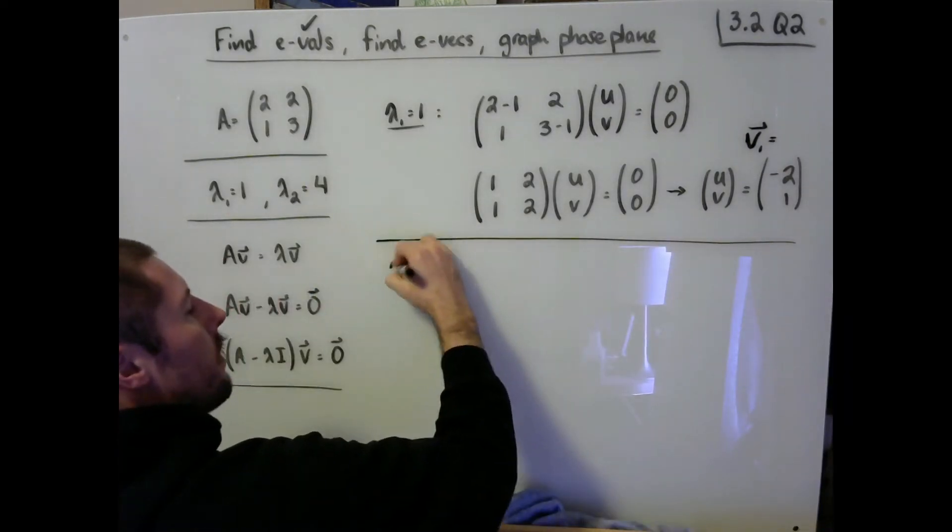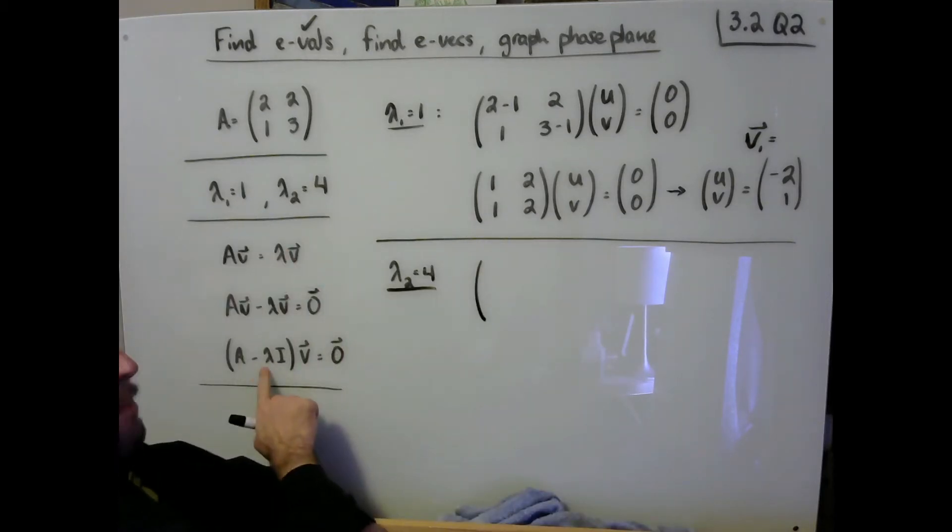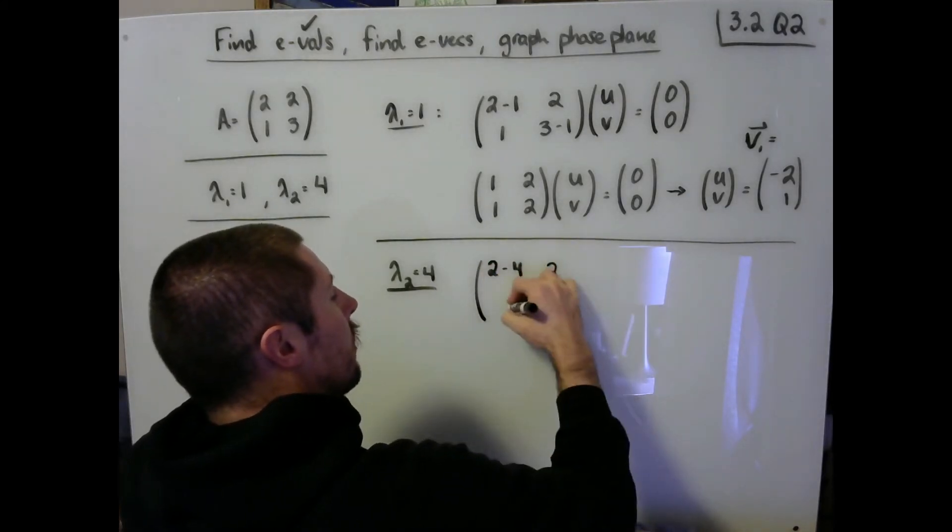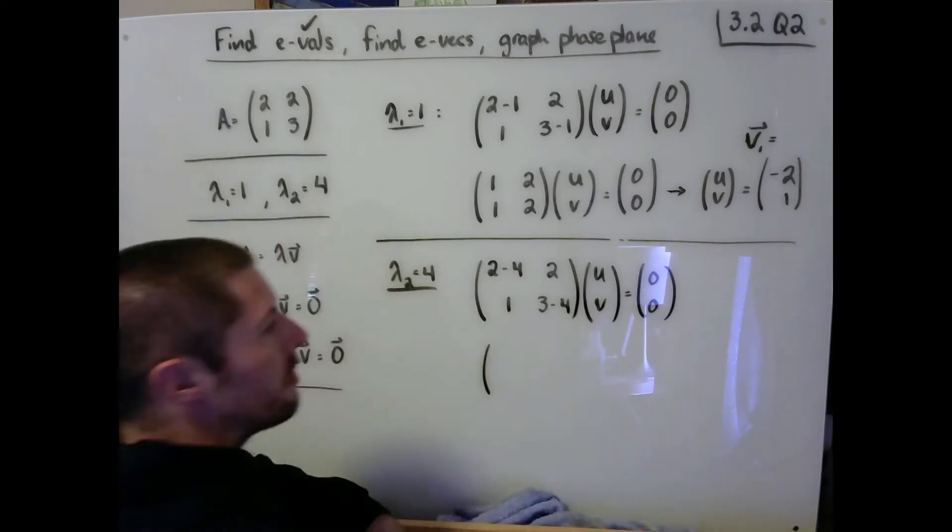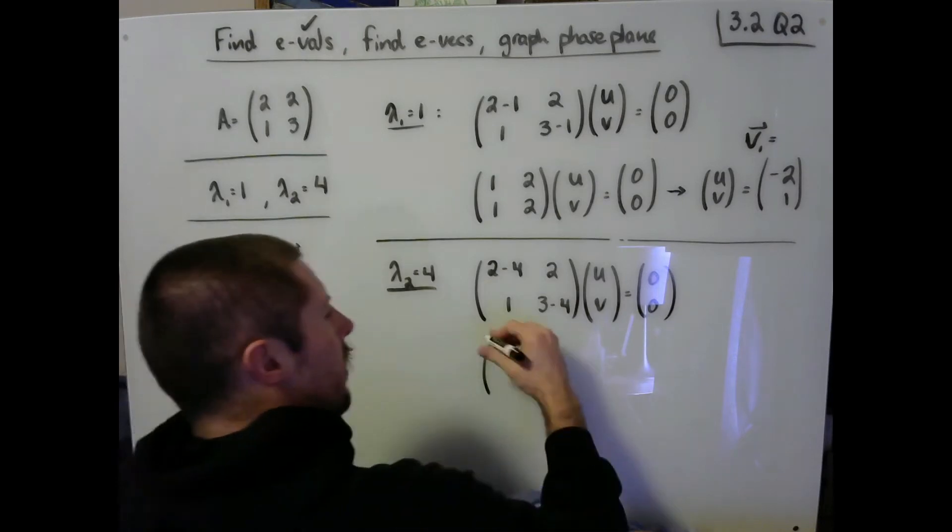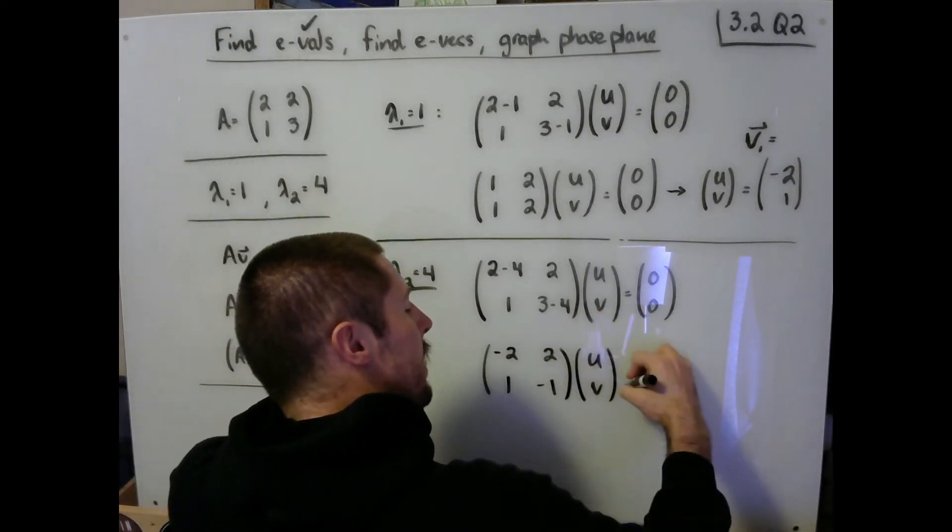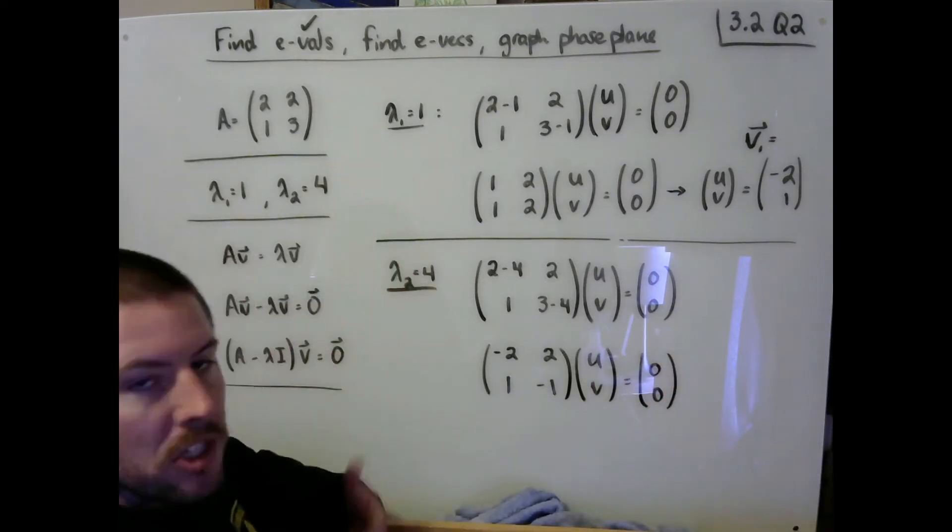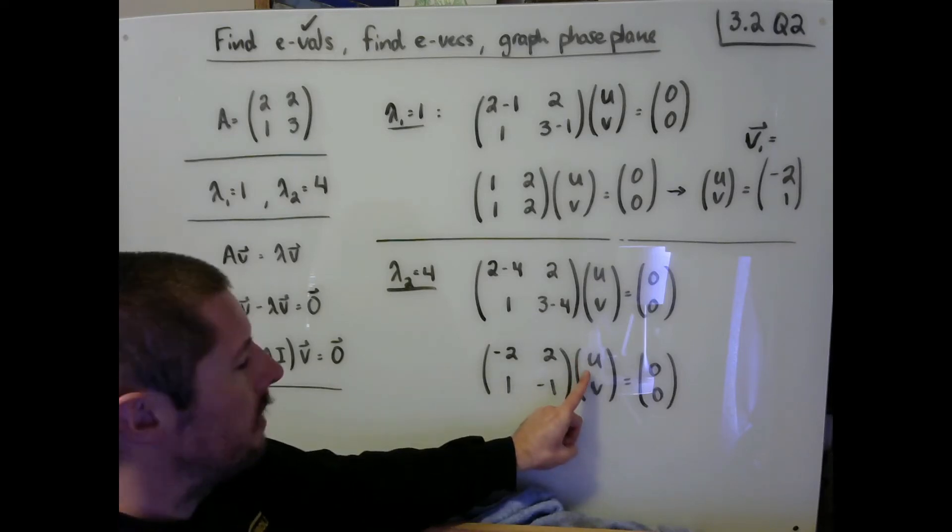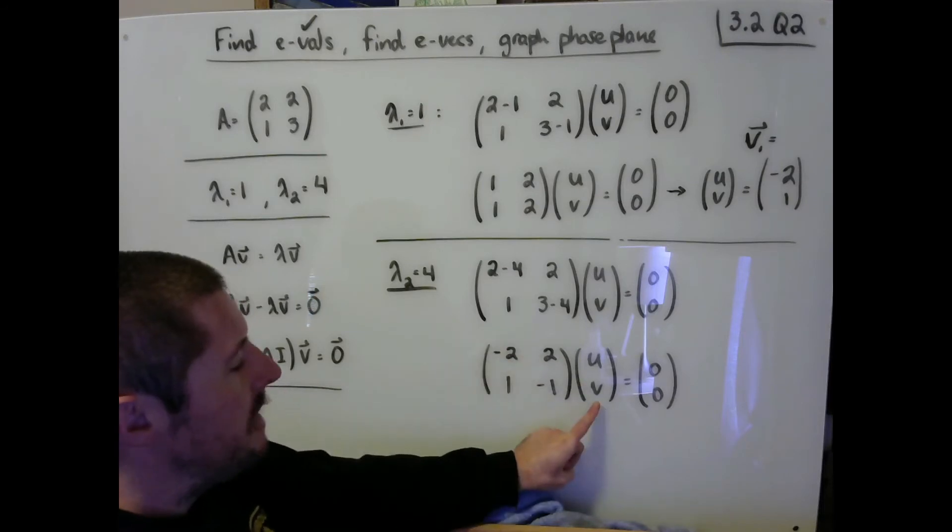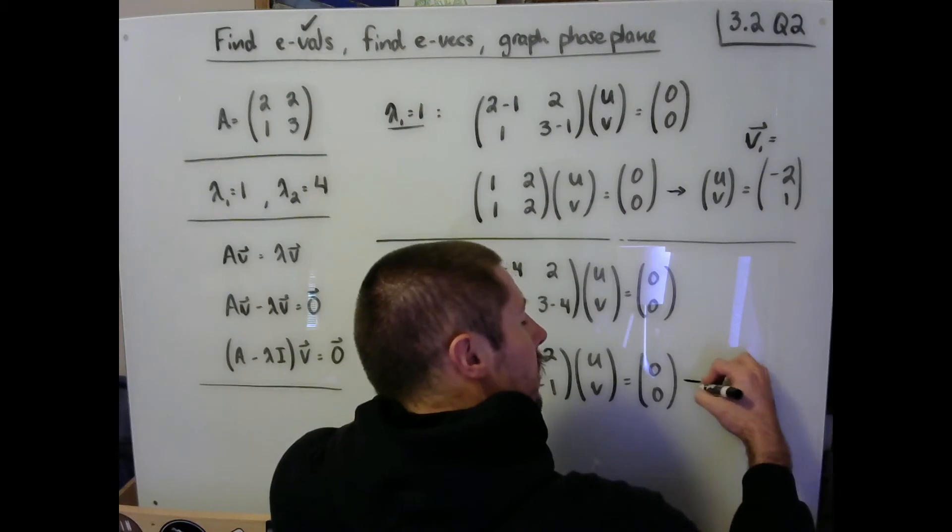Now let's do the same thing for lambda 2 equals 4. We're looking for the eigenvector that is associated with the eigenvalue of 4. I'm going to go ahead and look at my A minus lambda I matrix: 2 minus 4, 2, 1, 3 minus 4, times uv equals 0, 0. We're going to see that we get negative 2, 2, 1, negative 1. Again, you should recognize that this is redundant information. What I'm seeing here, notice that if we let u be positive 1, then we get positive 1 times negative 2. If we let v be positive 1, then we get positive 1 times positive 2 is positive 2. Negative 2 and positive 2 will take us to 0. And so I think that 1, 1 is a good eigenvector here.